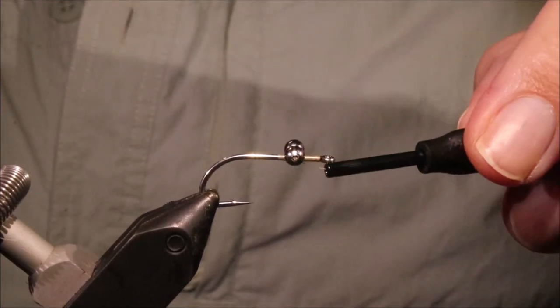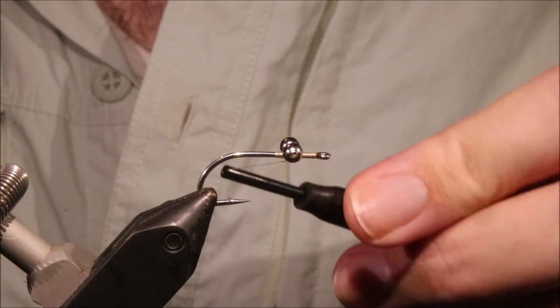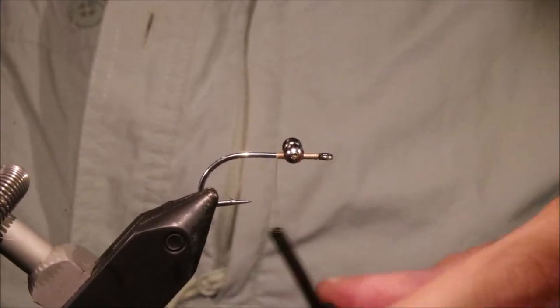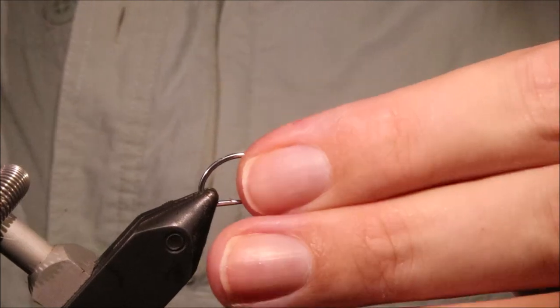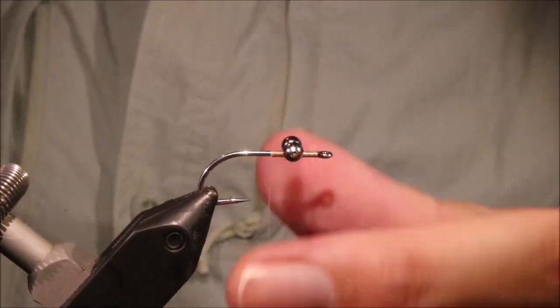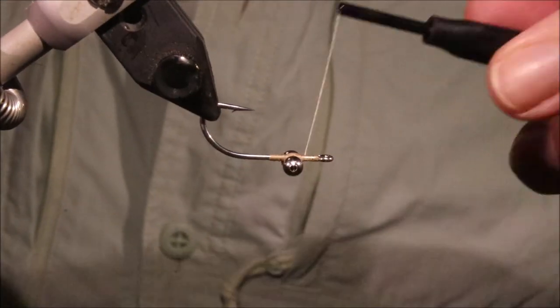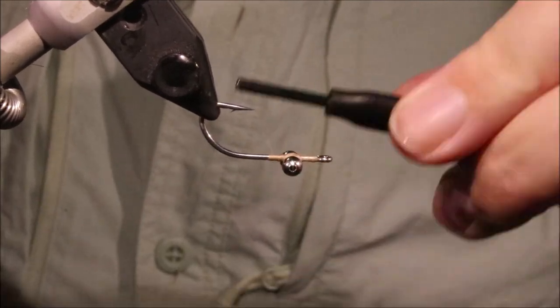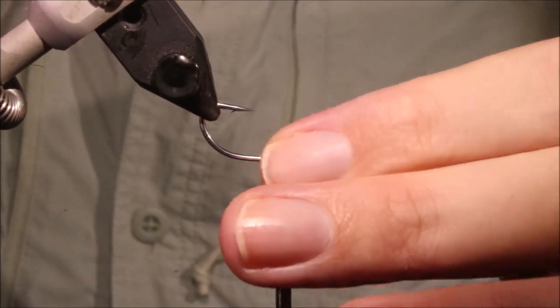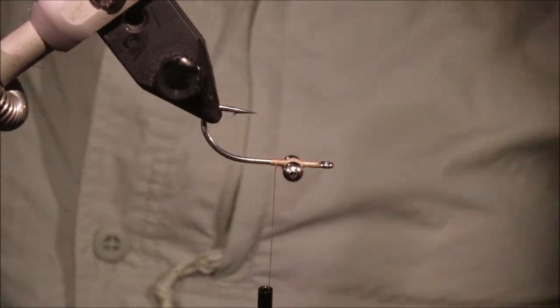So I'm just figure-eighting on some medium bead chain eyes. And again, I never put barbells on this, or dumbbells, it's always just bead chain. And I've just got about half a shank covered with thread. I'm just going back and forward loads of times. And that's nice and tight, nice and solid. Turn the hook over.